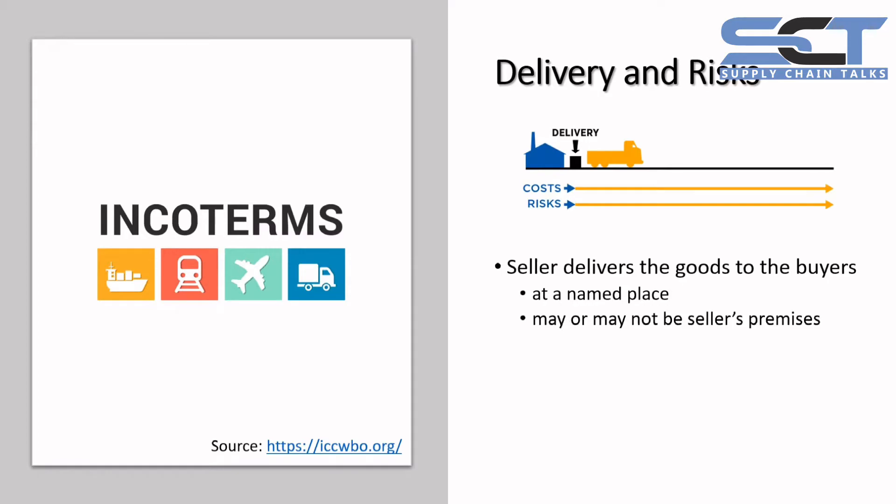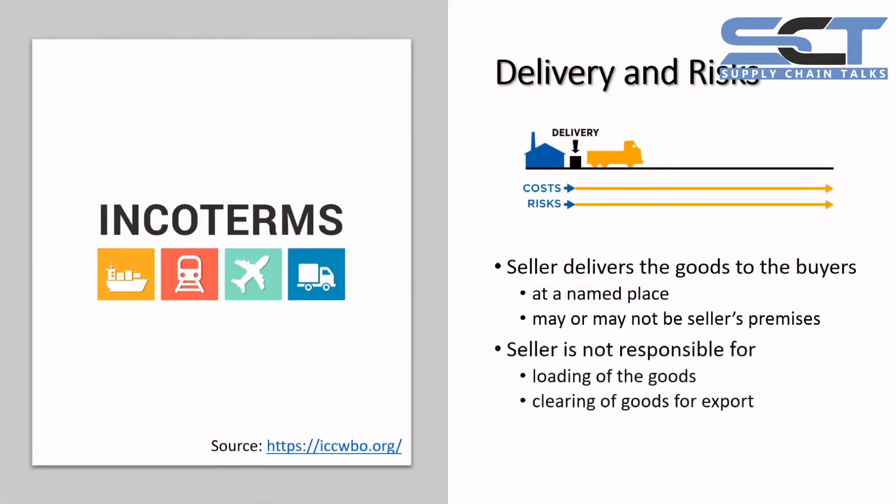The named place may or may not be the seller's premises — it can be any other defined place, but this needs to be very clearly defined in the Incoterms. In the case of EXW, for the delivery to occur, the seller does not need to load the material or product onto the collecting vehicle or transport. All it needs to do is place the product at the defined place. Once the product is placed, the delivery is done and the risk is transferred from the seller to the buyer.